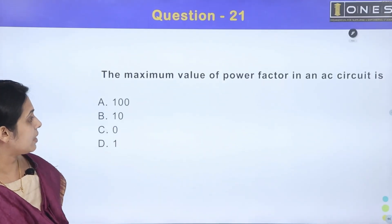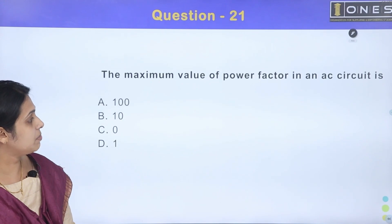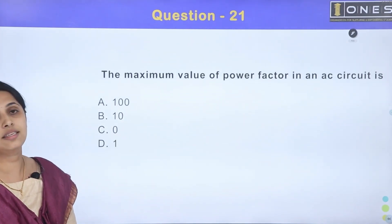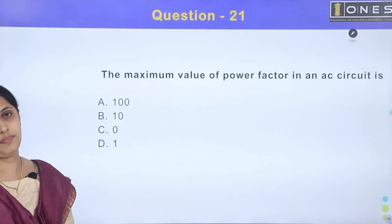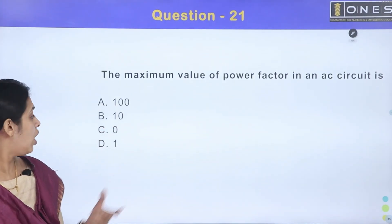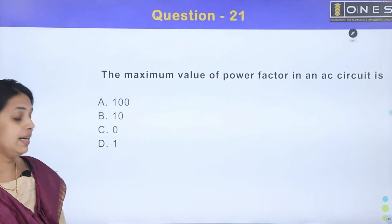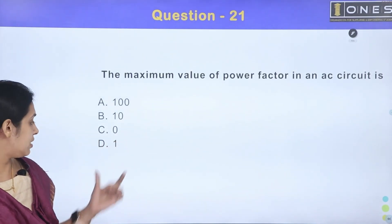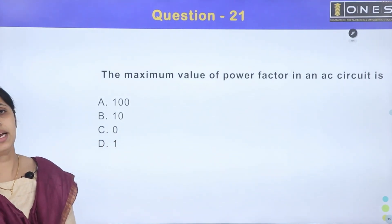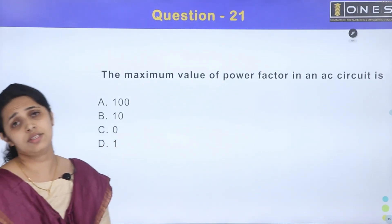What is the first question? The maximum value of power factor in an AC circuit is: Option A: 100, Option B: 10, Option C: 0, and Option D: 1. What is the power factor?